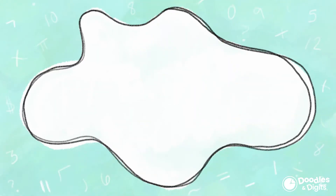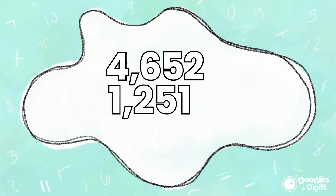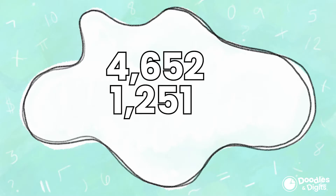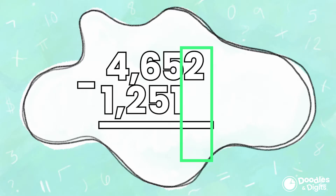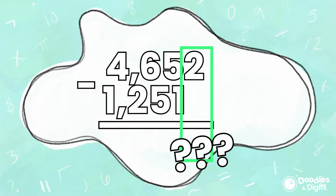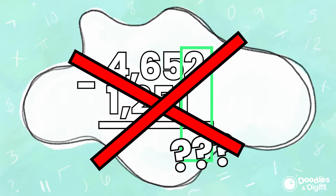My teacher's always telling me I need to line things up a certain way. Why is that important? Lining things up is crucial because it ensures that we are subtracting the correct place value. Look at this example: we didn't line the numbers up, and now we're trying to subtract the ones in 4,652 with — that's not the correct way to do it.